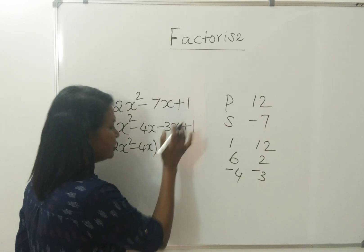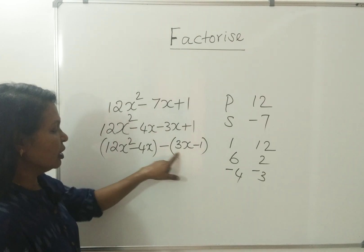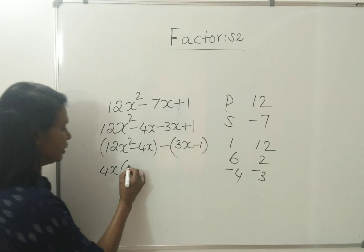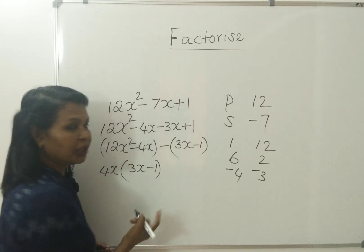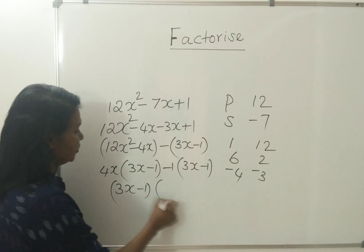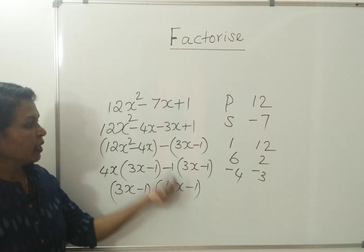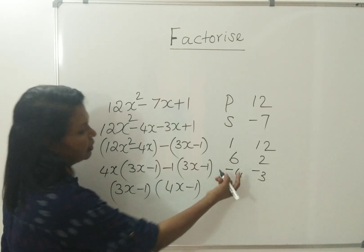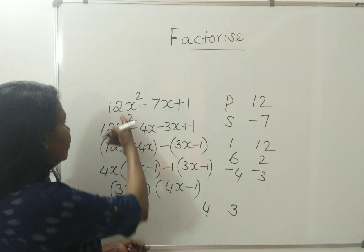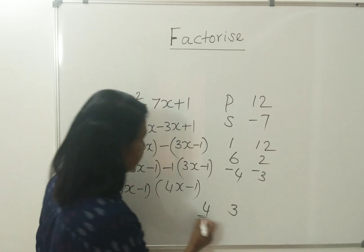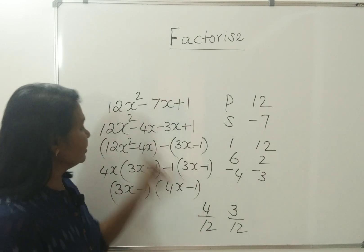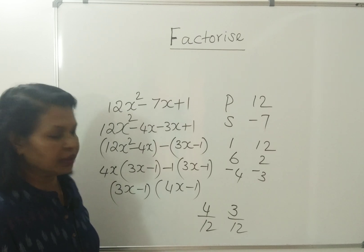Minus 4x is common. So we get 3x minus 1. Next, this is not the common number; 1 is there. So you take minus 1 into 3x minus 1. So 3x minus 1 is again common, into 4x minus 1. These are the factors.